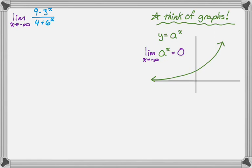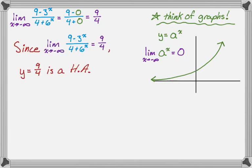Now thinking about the limit as x→-∞: the 9 has no x, so it stays 9. The 3^x is an exponential, so as x→-∞ it goes to 0 — so it's minus 0. The 4 has no x, so it stays 4. And 6^x is an exponential, so it also goes to 0. This cleans up to 9/4. So since the limit as x approaches negative infinity of (9 - 3^x)/(4 + 6^x) is 9/4, we know y = 9/4 is also a horizontal asymptote.